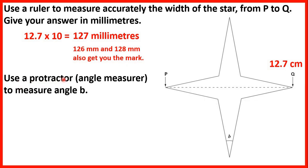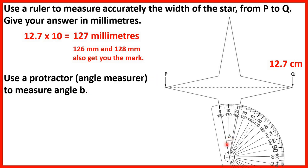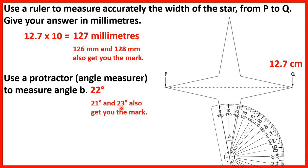Now use a protractor to measure angle B. Angle B is this angle here. We line up the protractor so the cross is on the point of the angle and the zero line is lined up with one of the lines of the angle. We're using the outside scale because that's where the zero is. We have 10, 20, and then another two little lines, so that's 22 degrees. 21 and 23 degrees also get the mark.